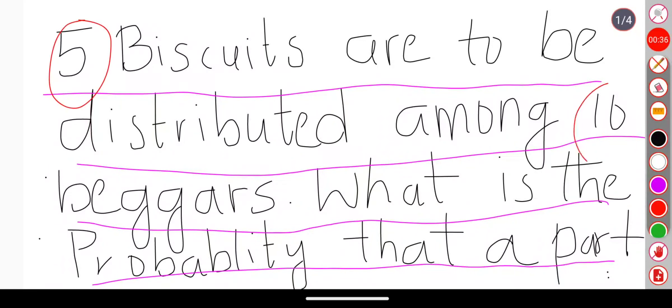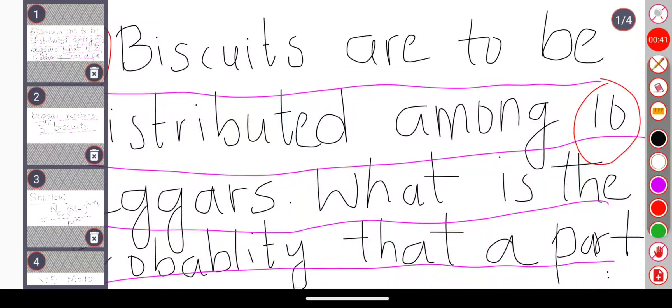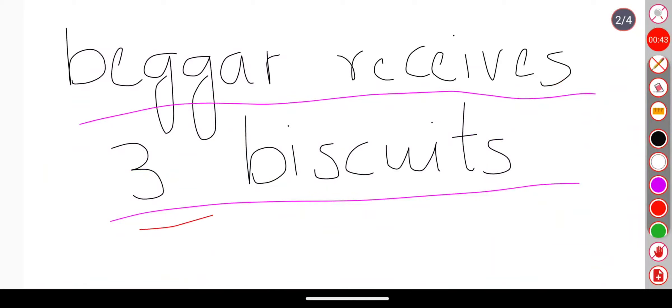This five biscuits we have to distribute among 10 beggars in such a way that a particular beggar will get three biscuits. Now in order to solve this problem we have two procedures: one is IP procedure, other is M set procedure.